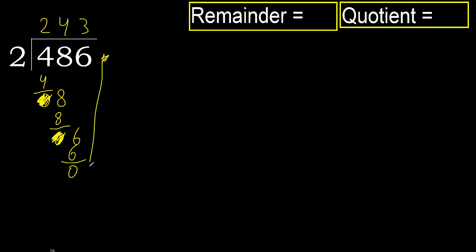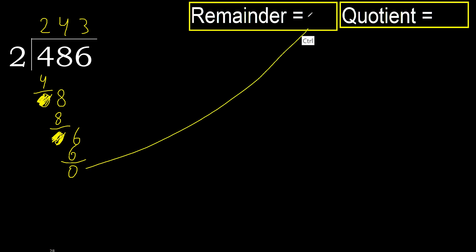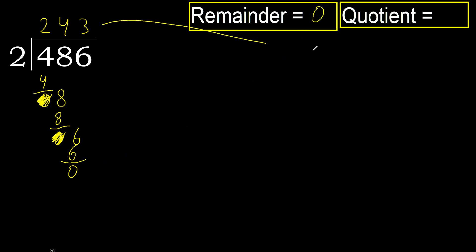There is no next number, therefore finish it. 486 divided by 2 is 243.